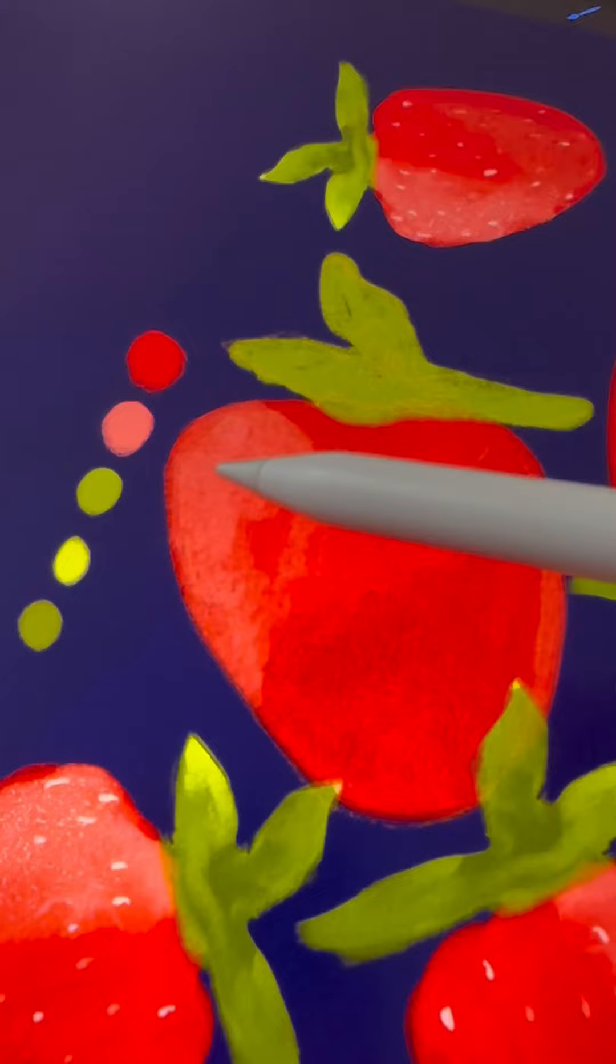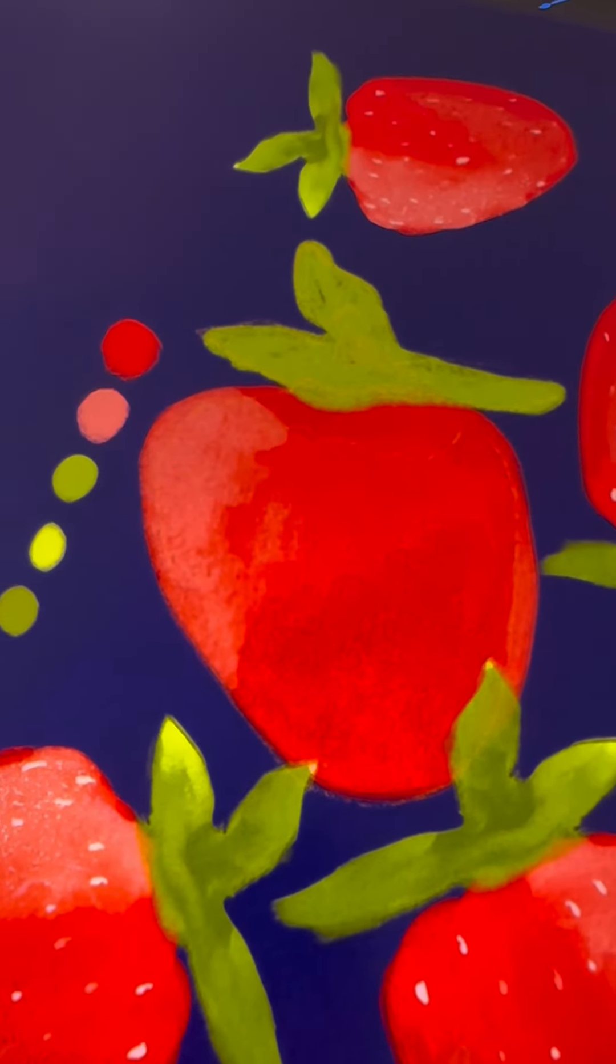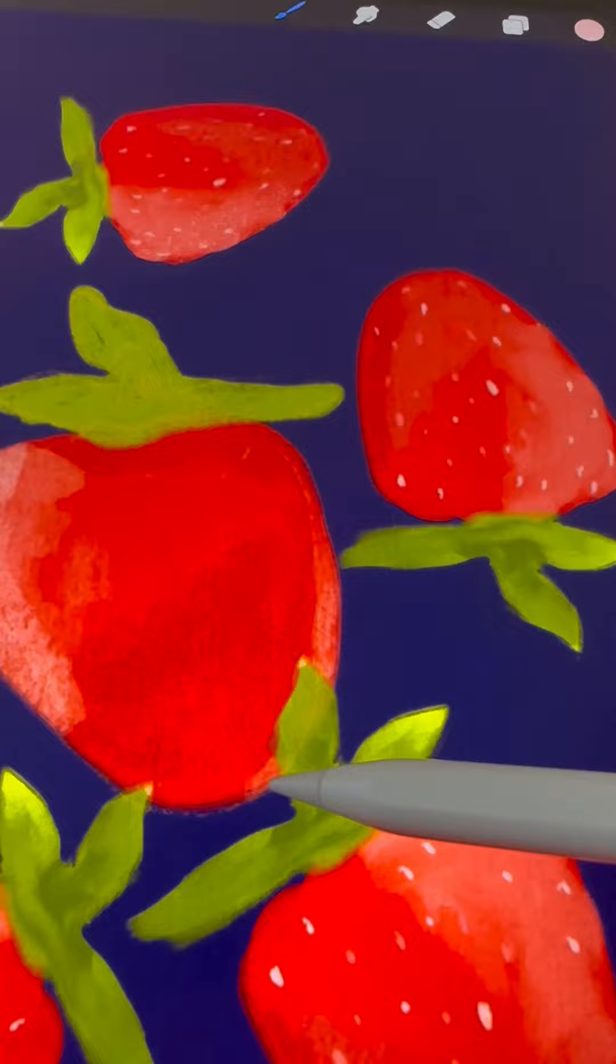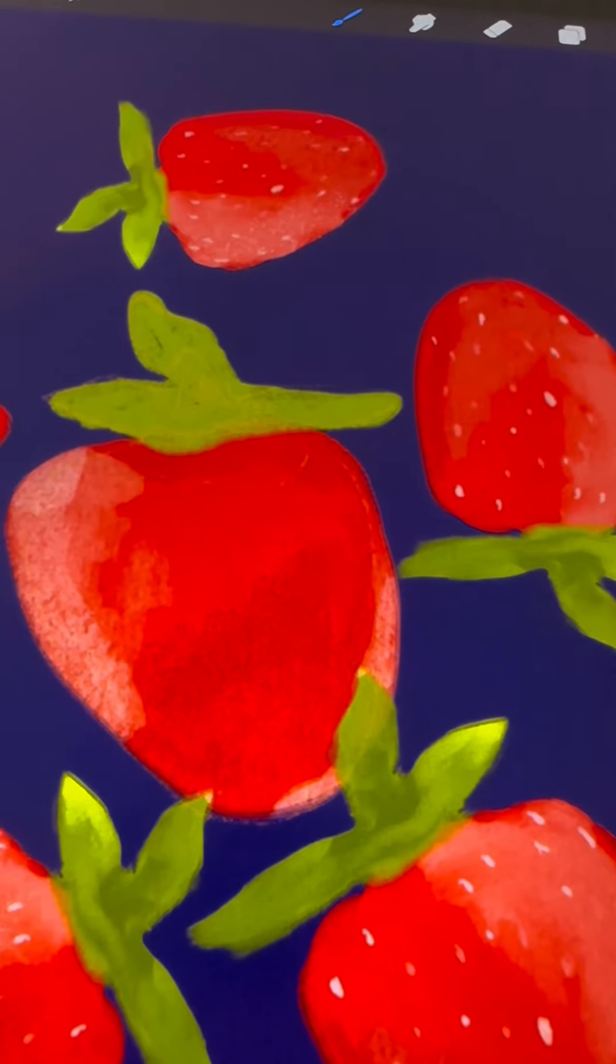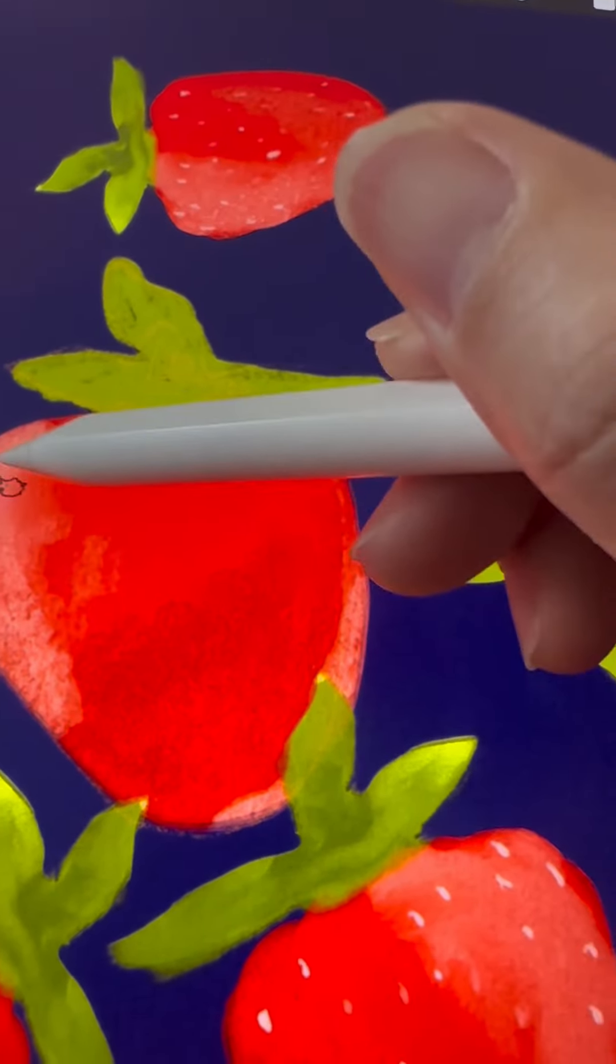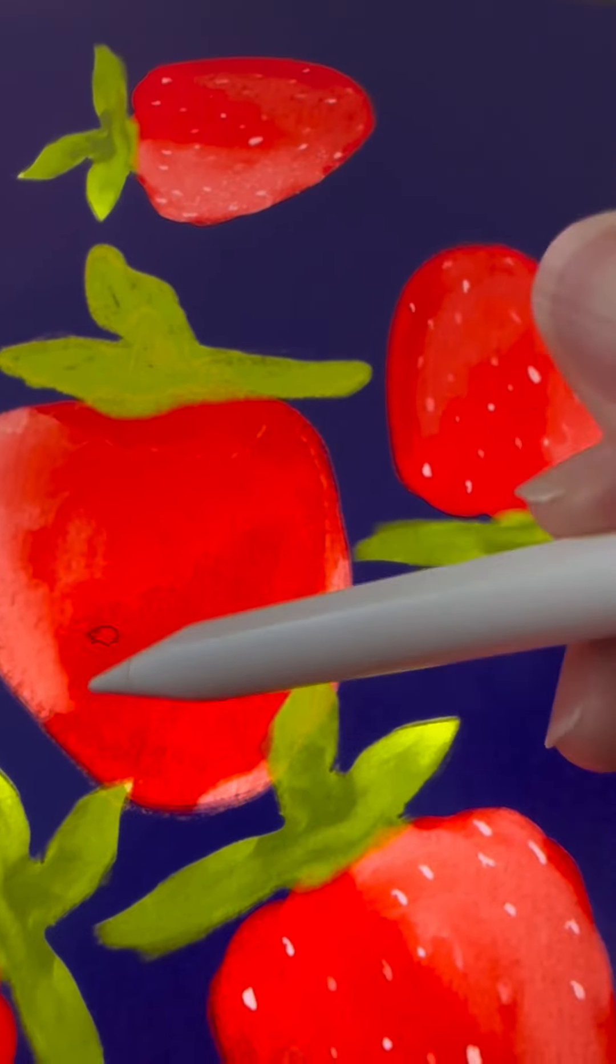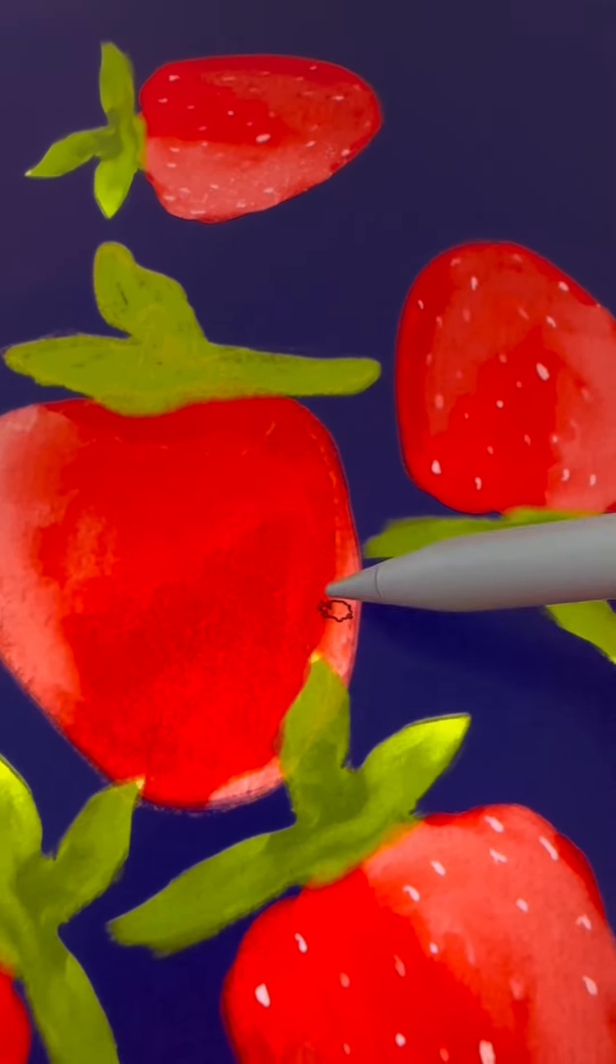Start by picking a light pink color and apply it where the highlights will go. Use the same texture brush to blend the colors, but don't overdo it. Keep it slightly organic.